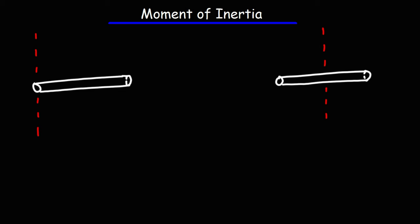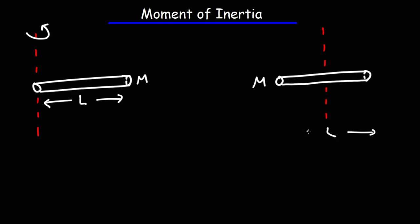Let's talk about the moment of inertia, particularly of a slender rod. On the left, we have a slender rod with length L and mass M, being rotated about an axis of rotation that goes through one end of the rod. On the other side, we have a slender rod with the same mass and the same length. The only difference is the axis of rotation is not through one end but right down the middle of the slender rod.